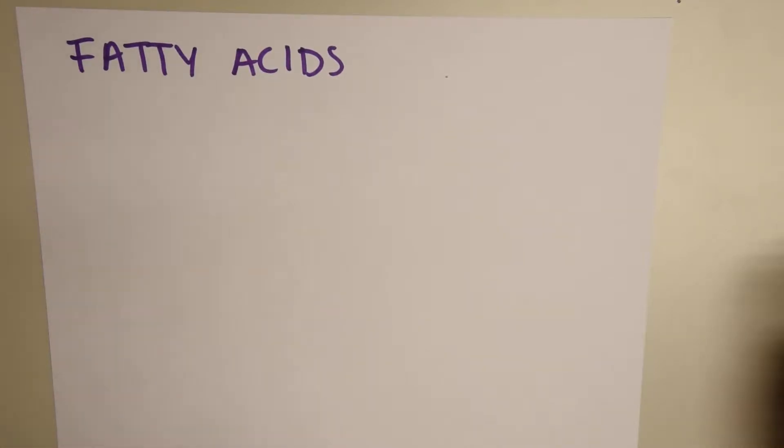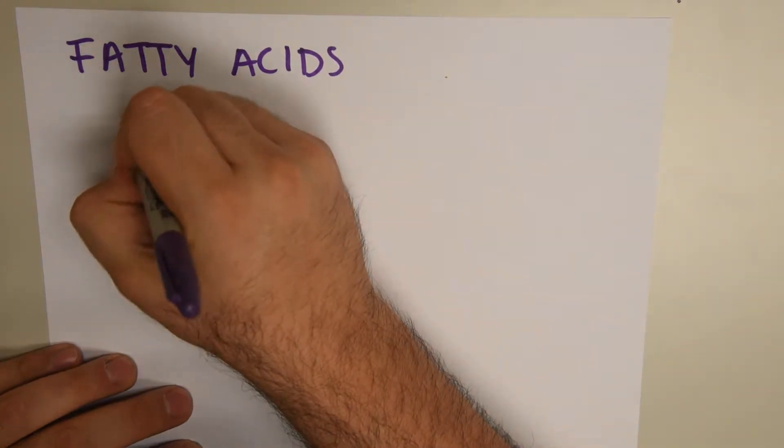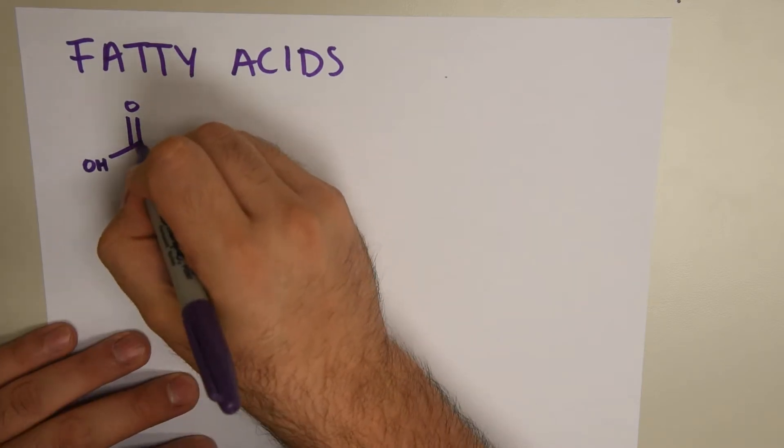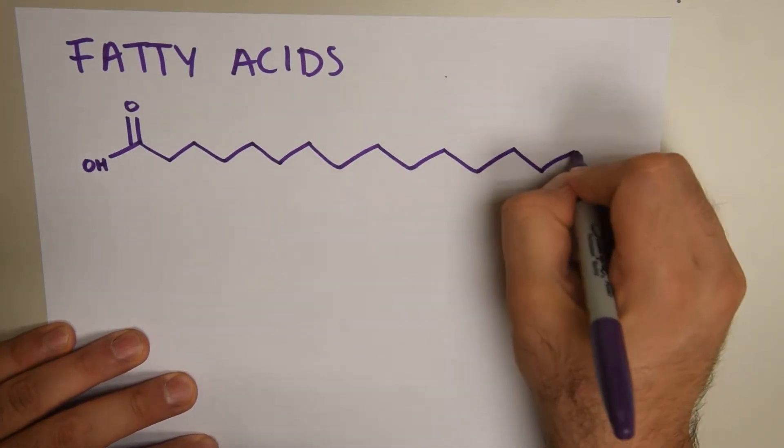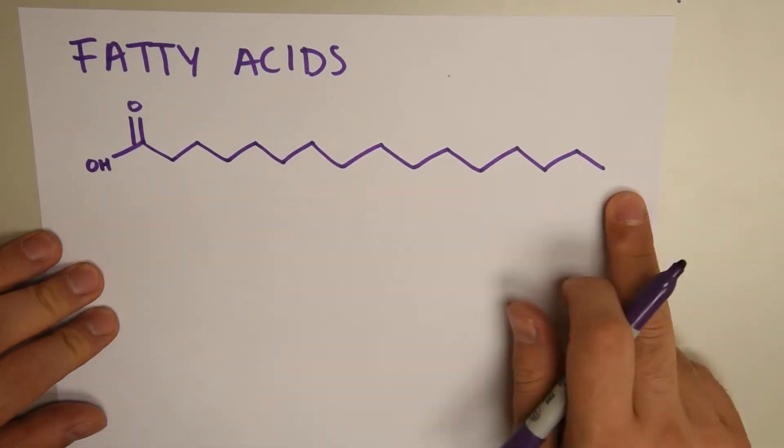Fatty acids are monomers for lipids, which are macromolecules. We're going to look at the structure. A fatty acid is nothing more than a carboxylic acid that has a long chain or a long tail. So if I draw my carboxylic acid, I start with my carboxyl group.